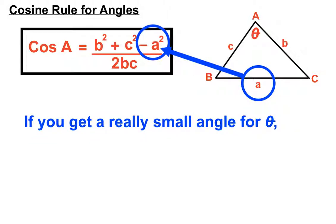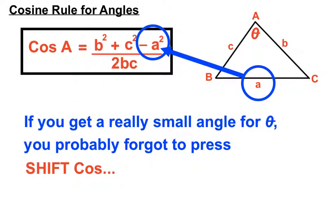If you get a really small angle for theta, such as theta equals 0 degrees, 0 minutes and 0.2 seconds or something really tiny like that, something under one degree, then that's probably a sign that you have forgotten to press shift cos in your calculations. Whenever you're finding an angle, you've got to press shift at some stage. Seeing this is the cosine rule, it'll be shift cos every time. We'll have to be careful how we enter things into our calculator.